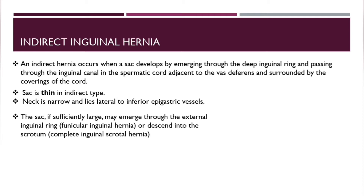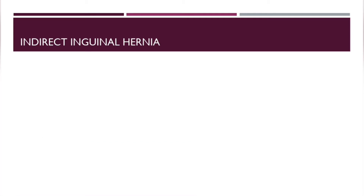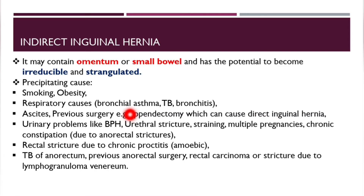The coverings of the inguinal hernia include, from outside: extraperitoneal tissue, internal spermatic fascia, cremasteric fascia, external spermatic fascia, and the skin. The indirect inguinal hernia may contain omentum or small bowel and has the potential to become irreducible or strangulated.